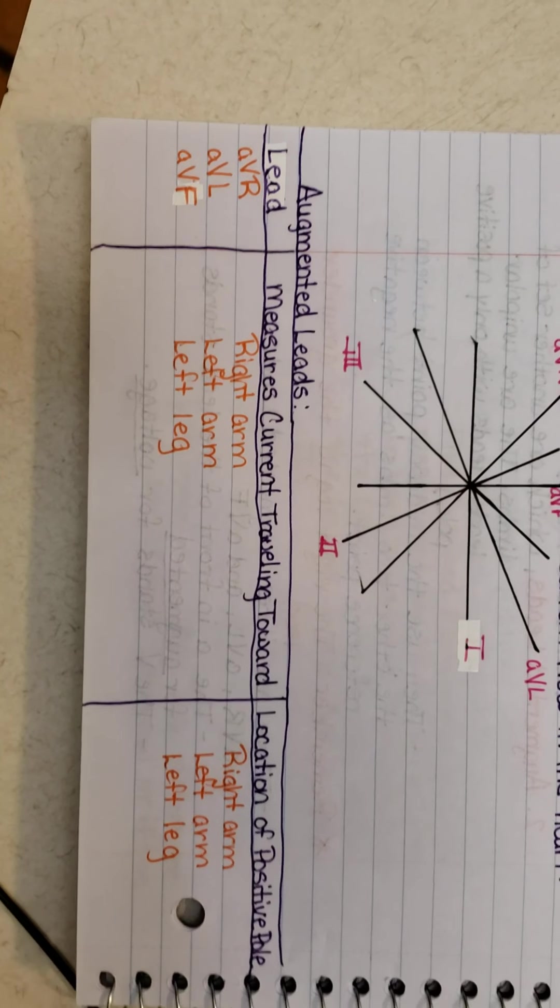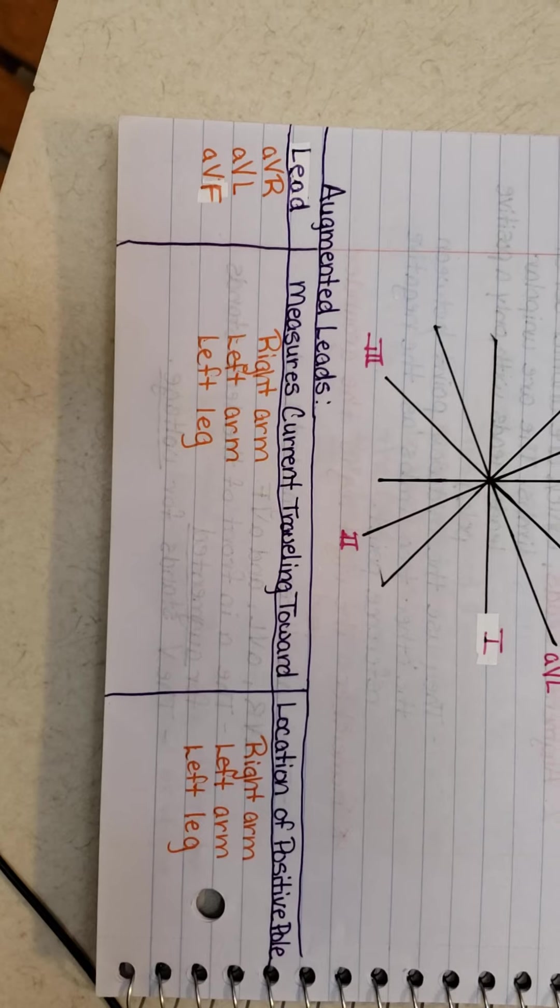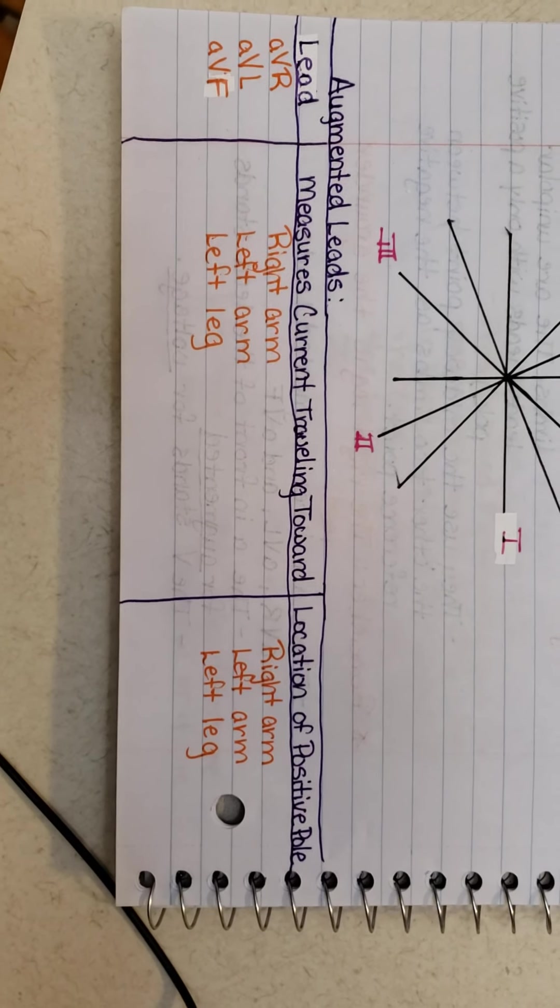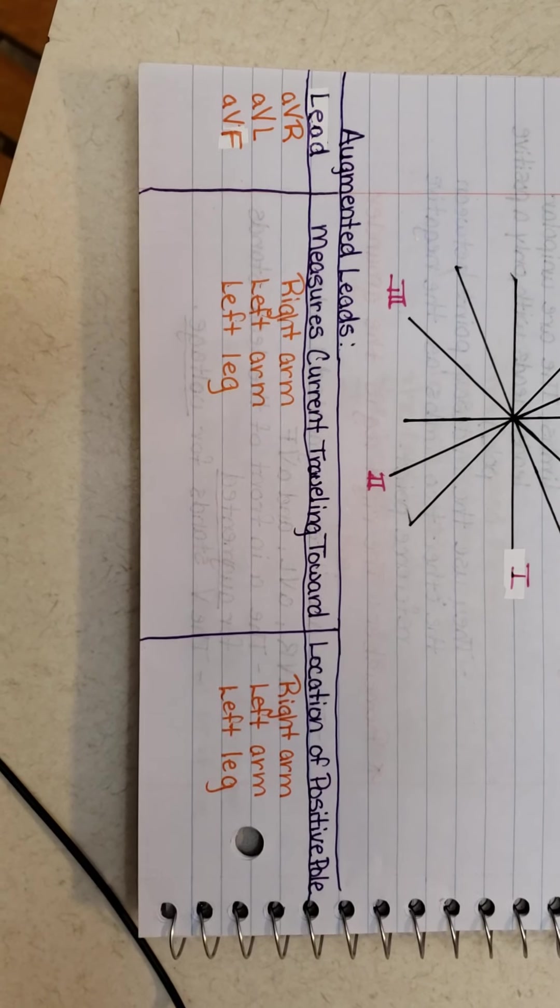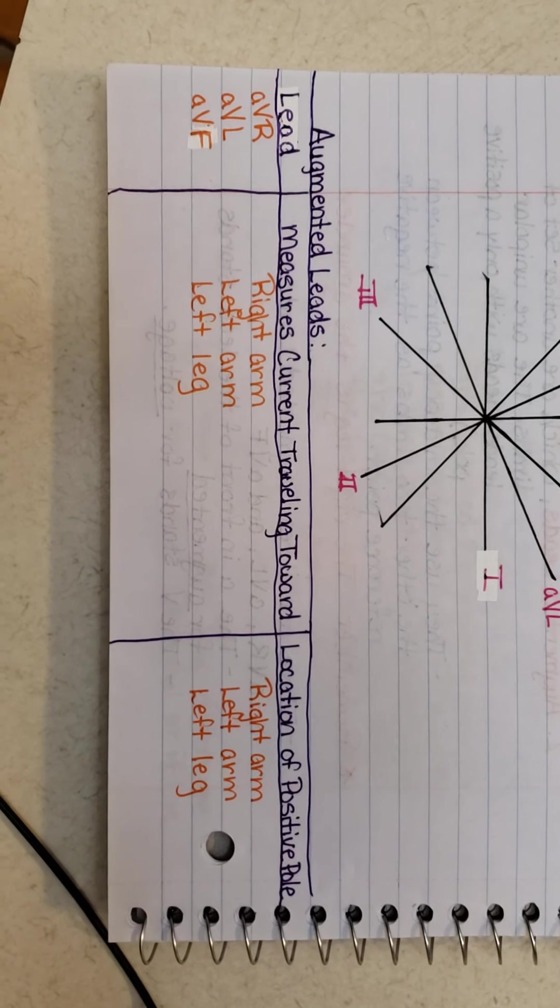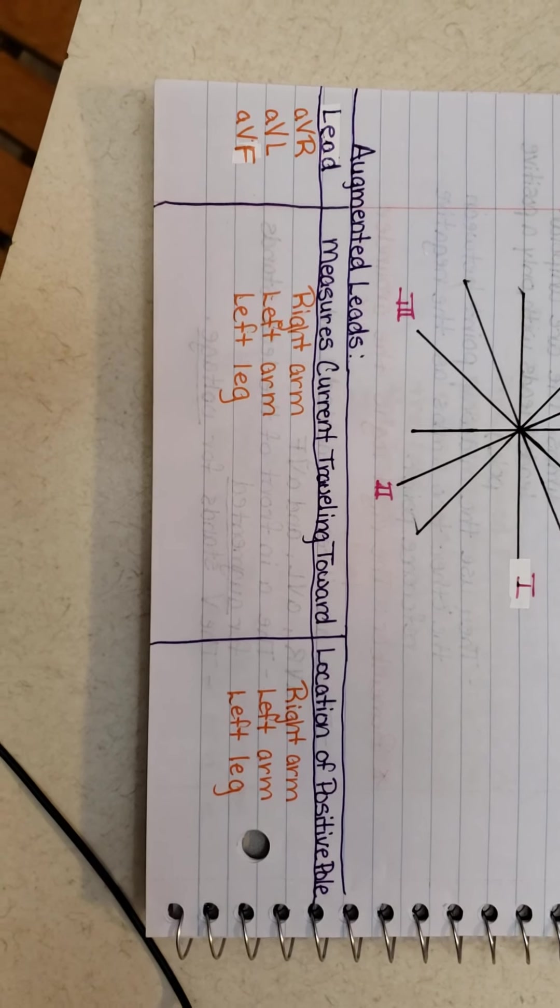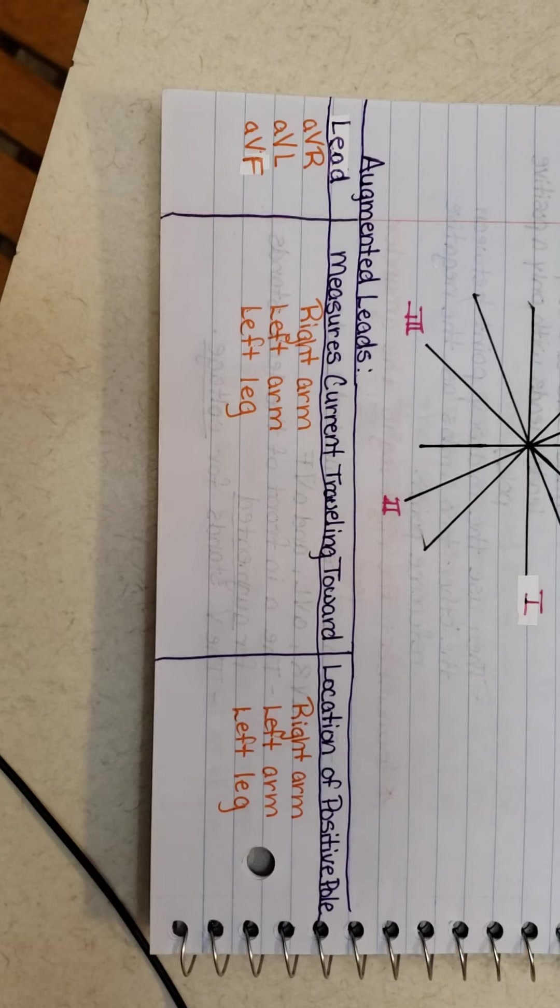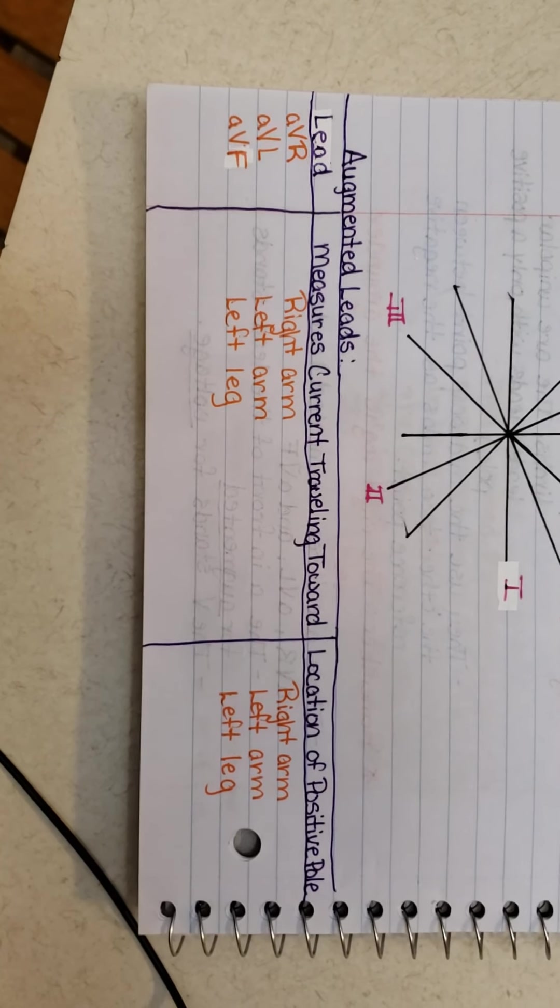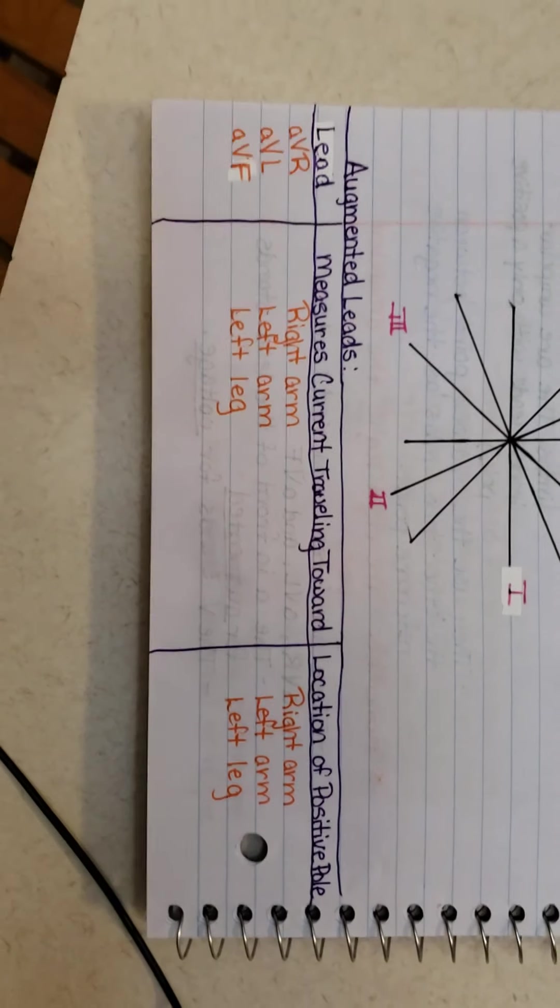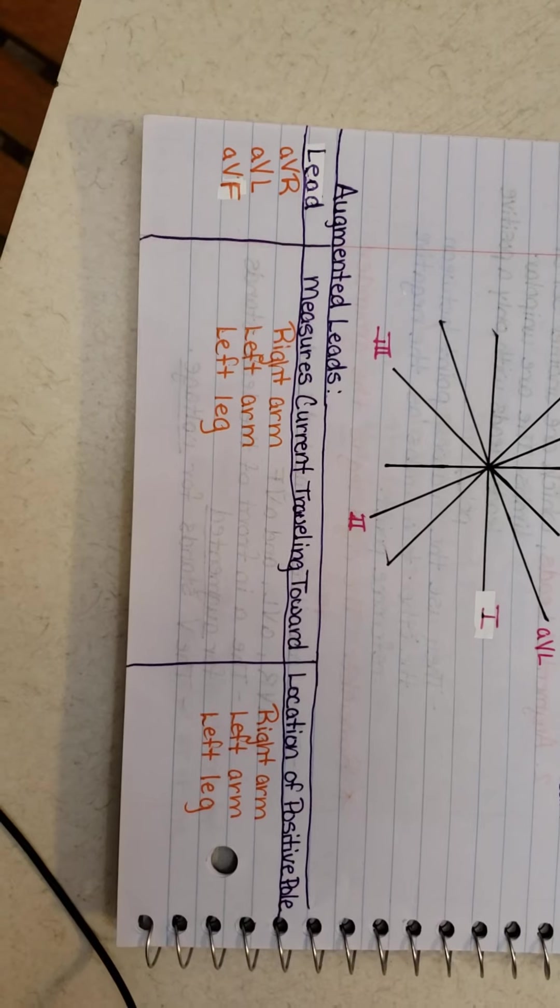All augmented leads reads such as AVR reads from right arm to right arm, which your right arm is the positive pole, because remember, augmented leads are only unipolar, so they're all going to be positive. AVL measures from left arm to left arm. AVF is left leg, and your left leg is positive because they're all unipolar. That means the current is traveling towards that direction.